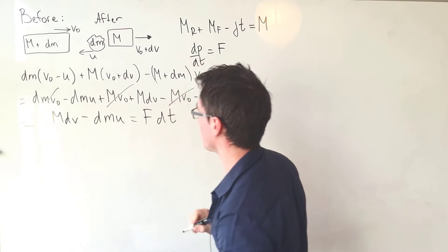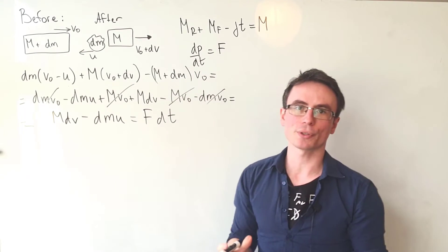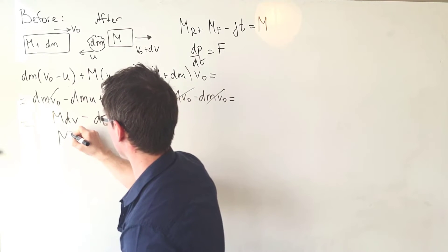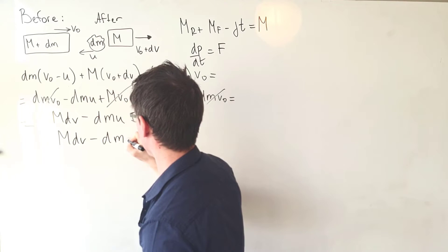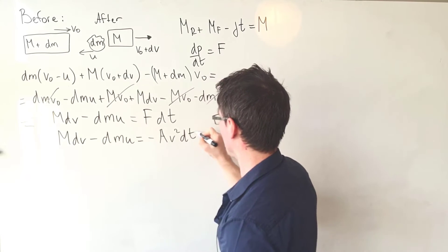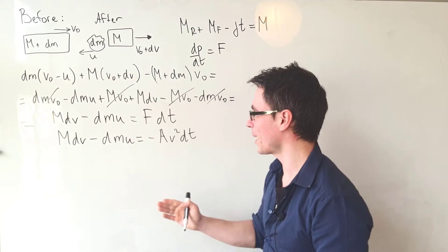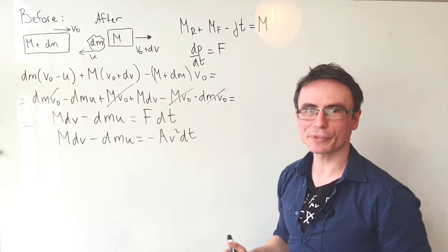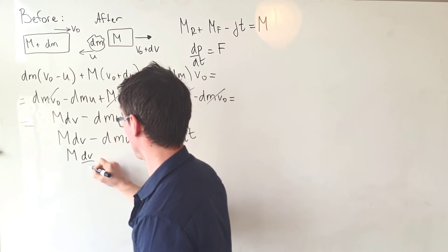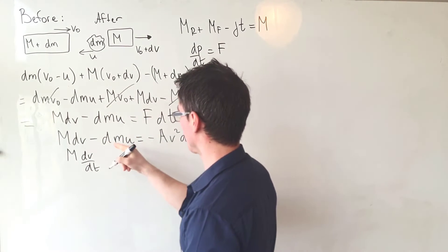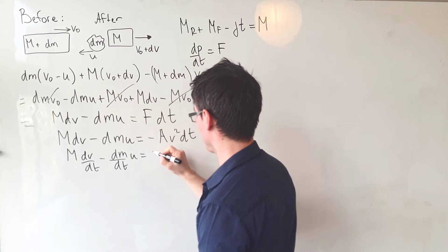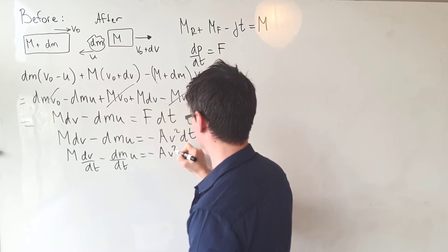We can set that equal to F·dt. We're given an equation for the force F in the question, so we can substitute it in and write: m·dv - dm·u = -av²·dt. Because we're trying to find an equation for the acceleration, I'm going to divide both sides by dt to get m·dv/dt - (dm/dt)·u = -av².